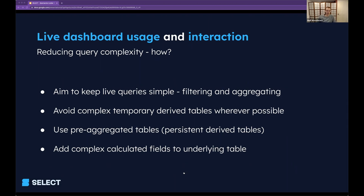We're familiar with derived tables in Looker, which can be used in two ways: either temporary or persisted. Persisted tables are really useful because the calculation isn't being recalculated every time you're using the view. Temporary derived tables, on the other hand, are calculated every time you're using that view. If you have any complex calculations in there, every time someone's viewing a dashboard, they're going to be recalculated every single time.